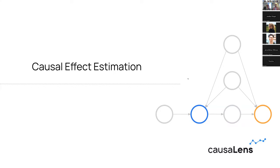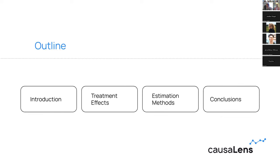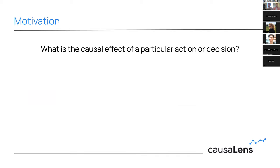Thanks everyone for joining. Today I'm going to talk about everything related to causal effect estimation. I'll start with an introduction and motivation, then talk about randomized controlled trials and observational versus interventional data. I'll give an overview of different treatment effects, then explain how to estimate those using backdoor criteria, front door criteria, propensity score matching, and related methods. I'll finish with conclusions and open research questions. Feel free to ask questions at the end of every section, and there will be plenty of time at the very end as well.